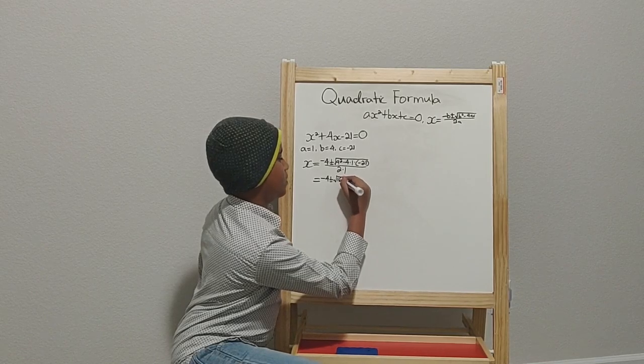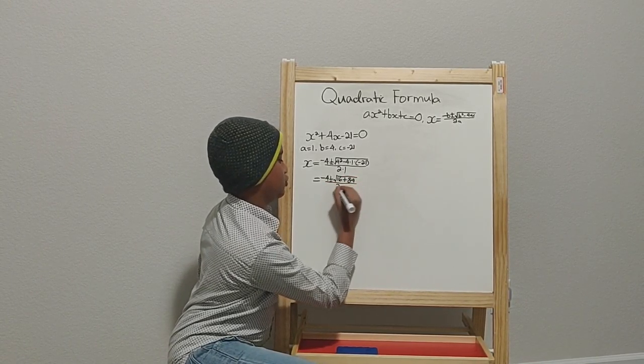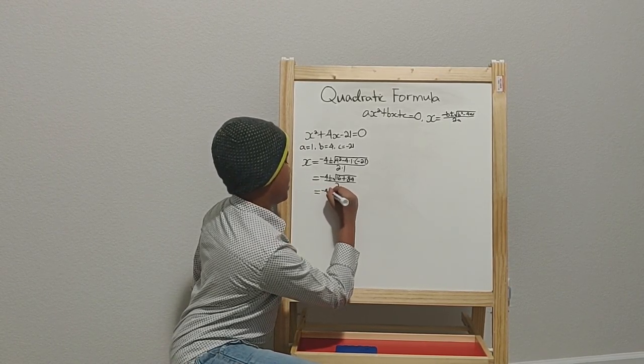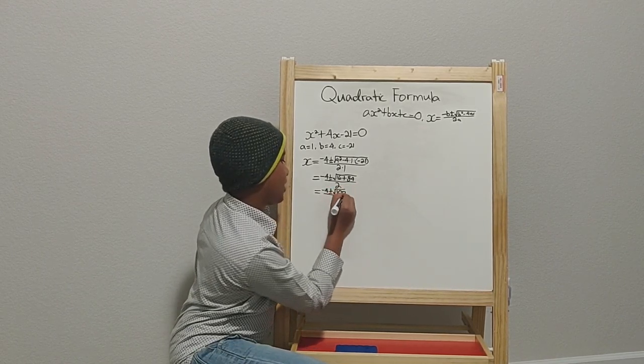So then you'll get 16 plus 84, all of that over 2, which equals negative 4 plus or minus the square root of 100, all of that over 2.